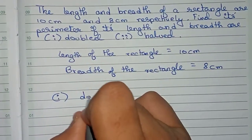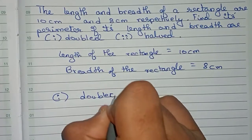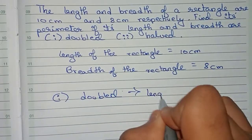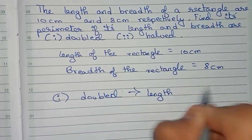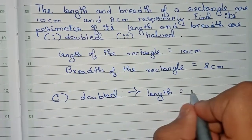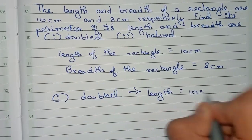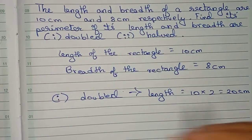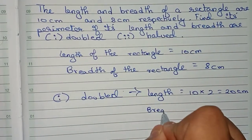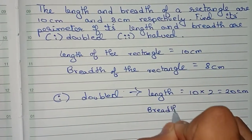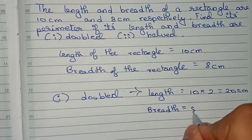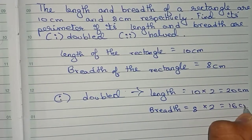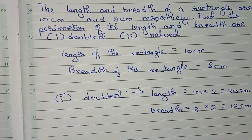Number one: if the length and breadth are doubled. Double means multiplied by 2, so the length will be 10 into 2, that is 20 centimeters. And breadth equals 8 centimeters, so 8 into 2 that will be equal to 16 centimeters.